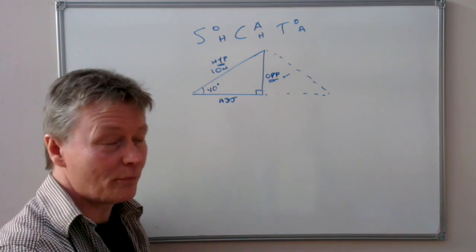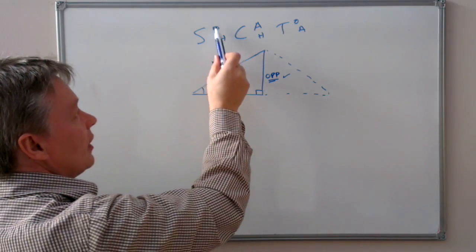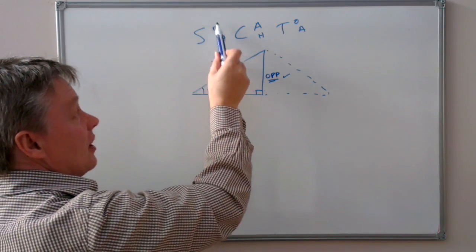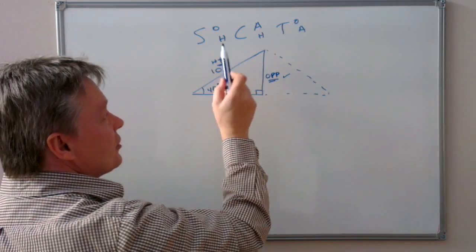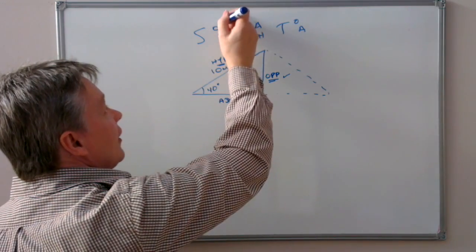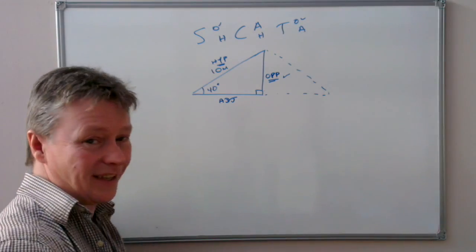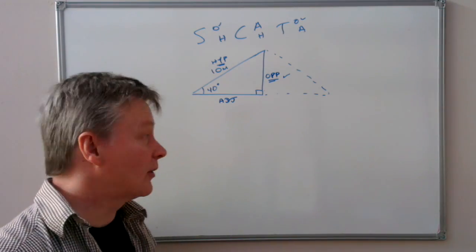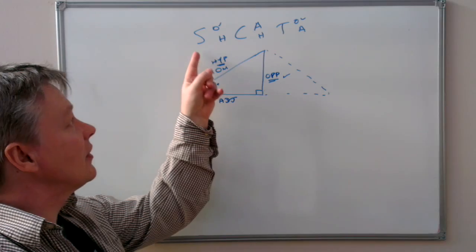Well, it means that we would either use the sine or the tangent, because both the sine and the tangent have the opposite within them, which means that we'll be able to calculate. However, only the sine has got the hypotenuse.